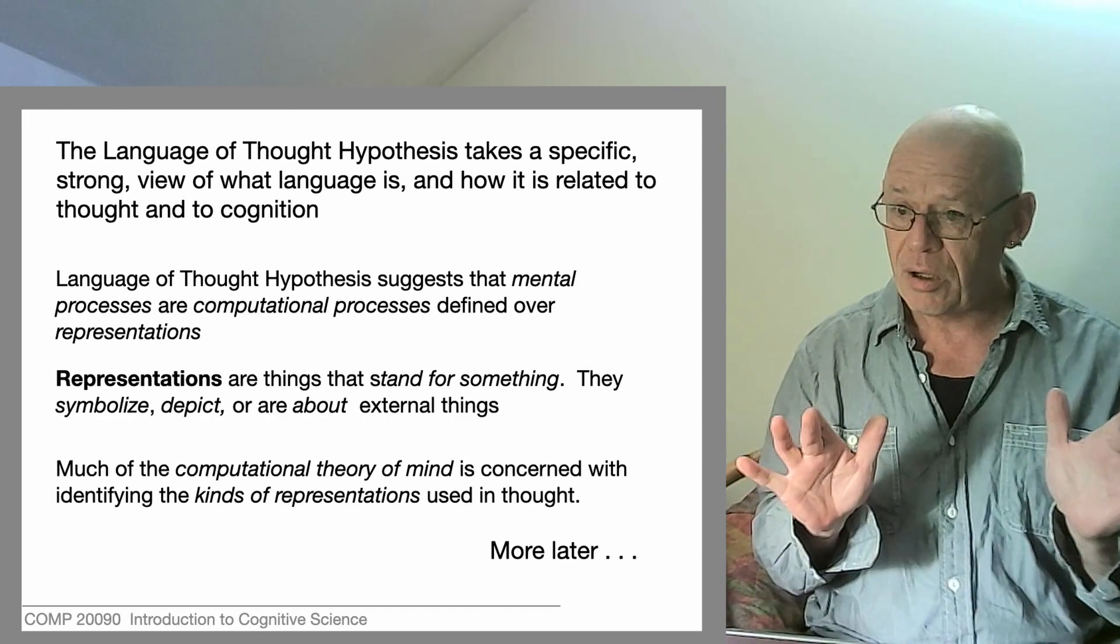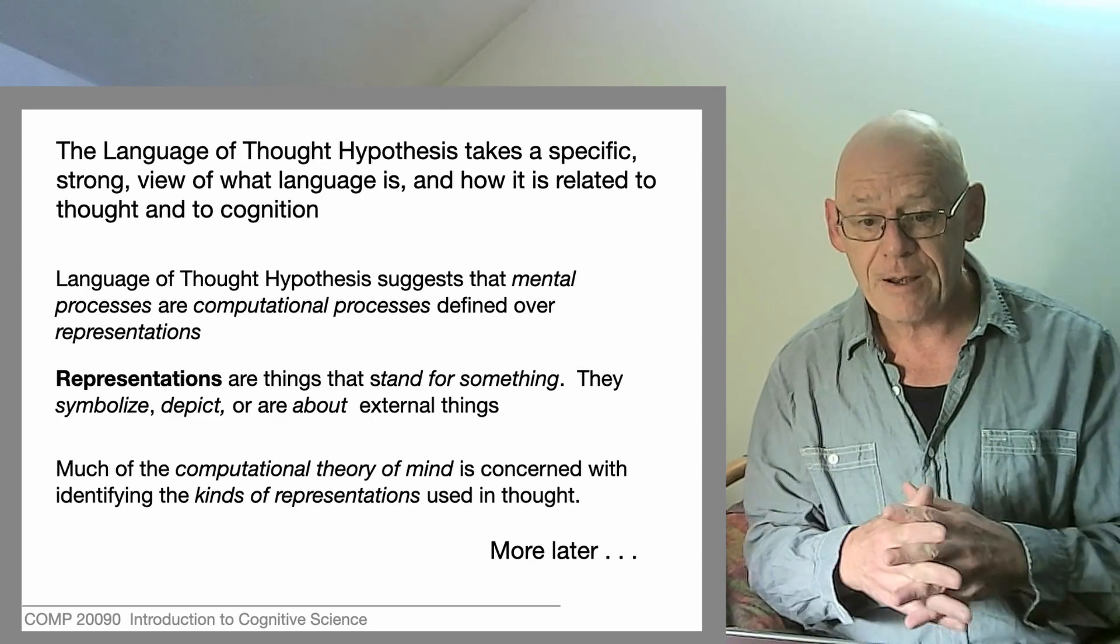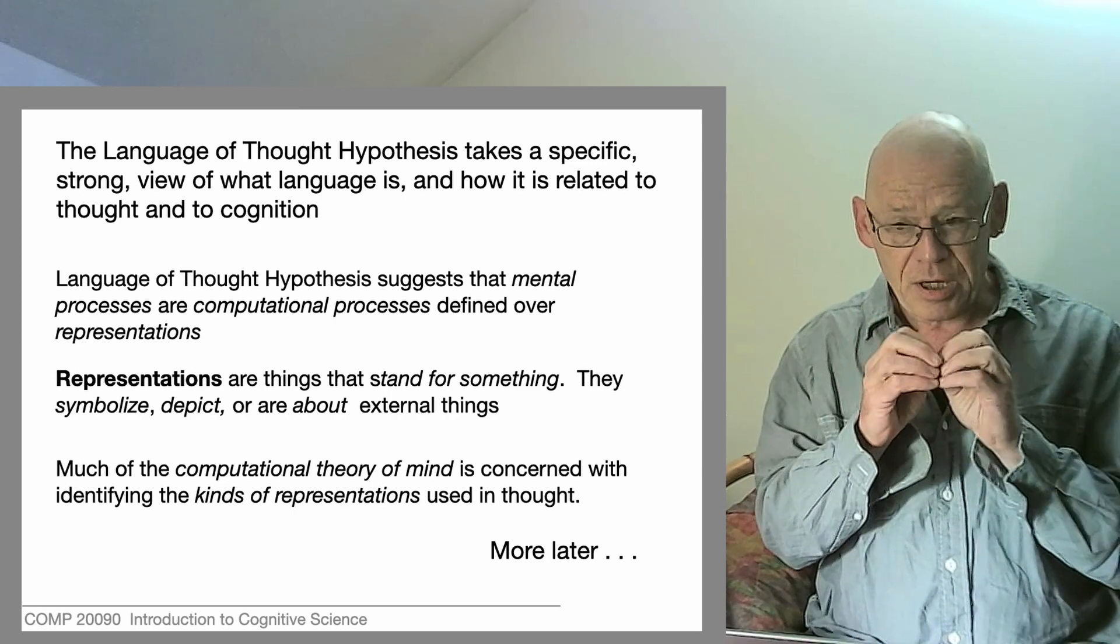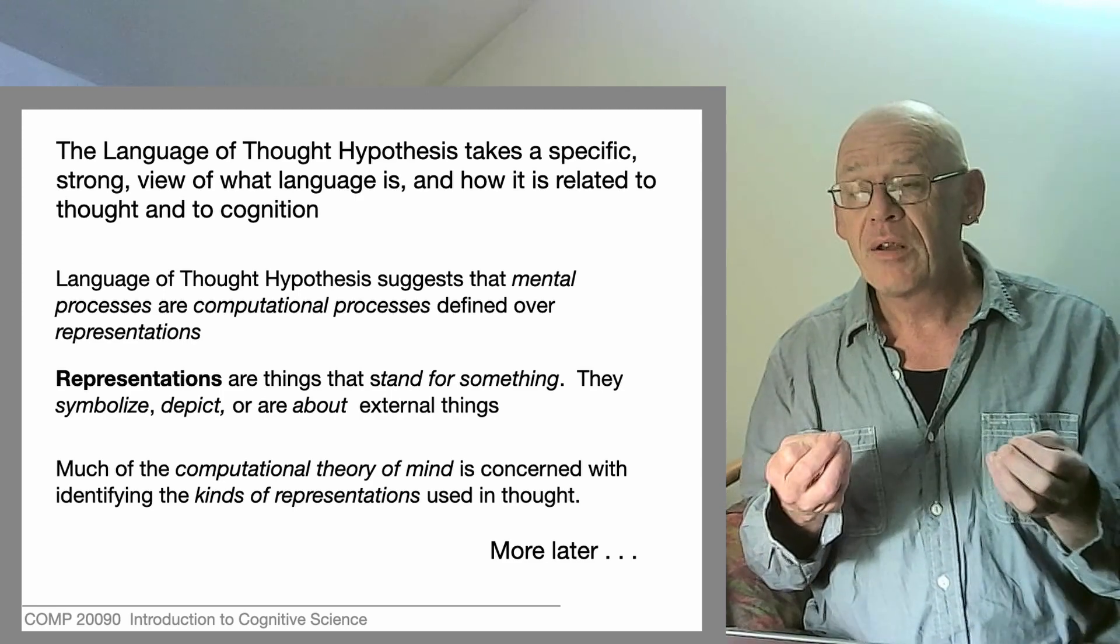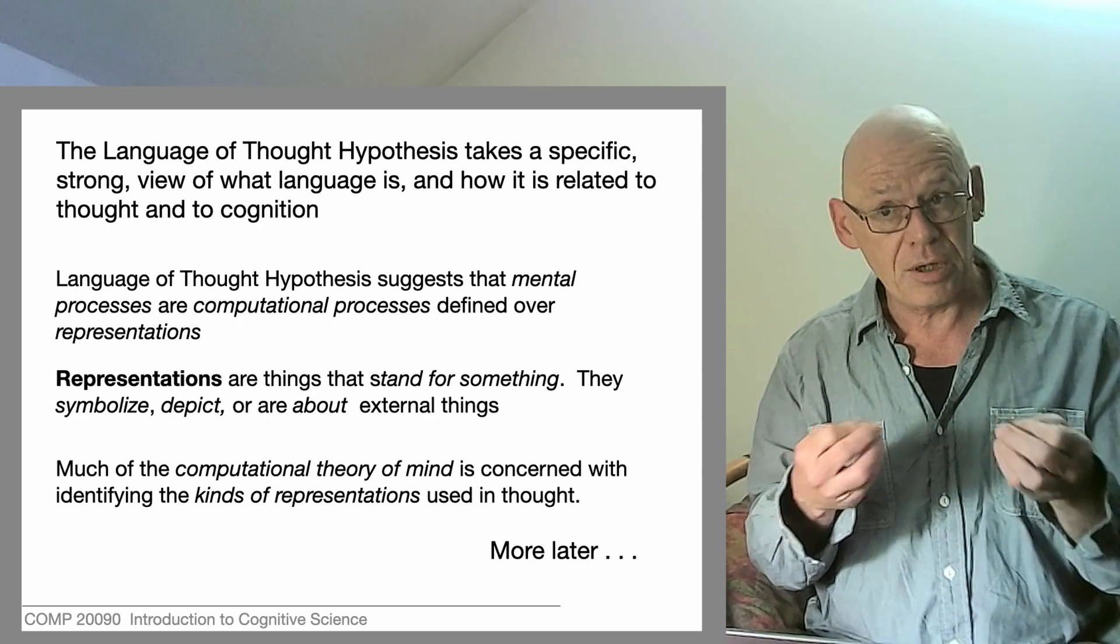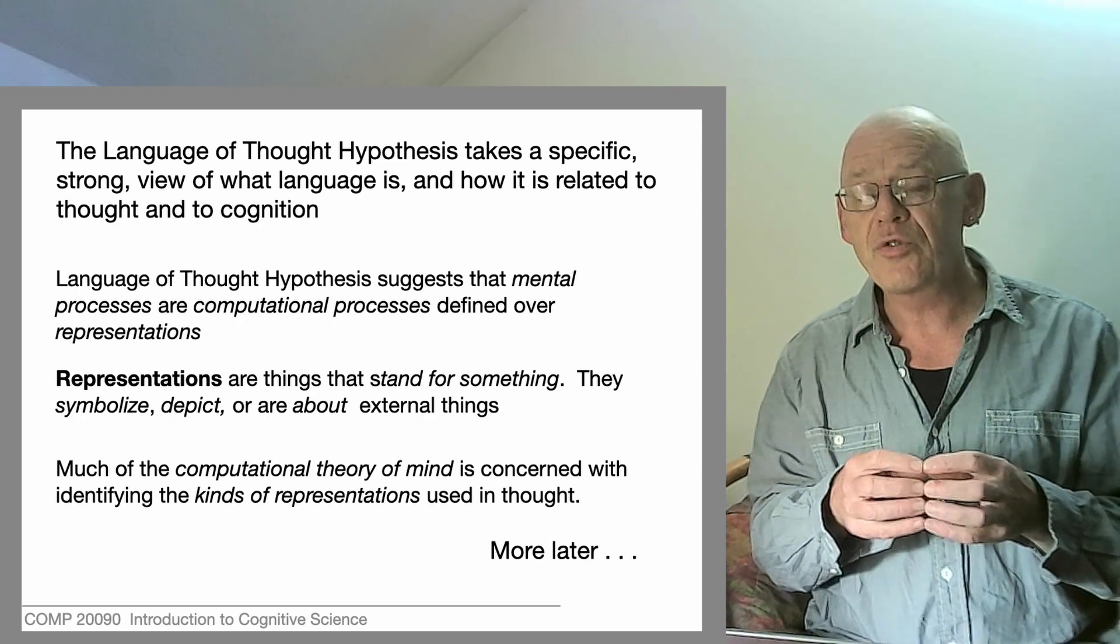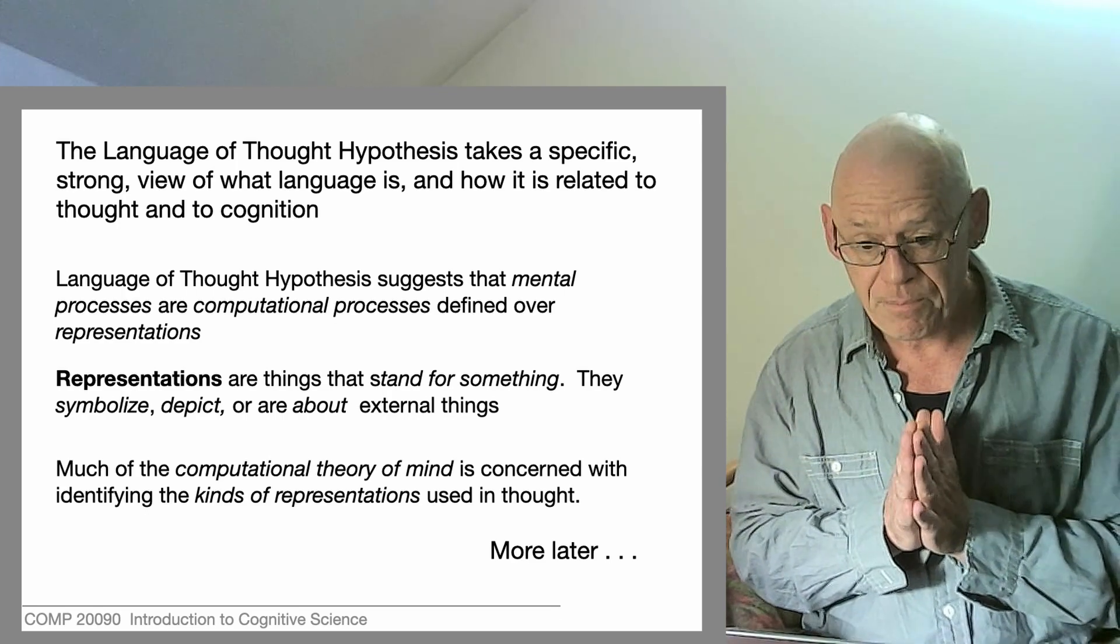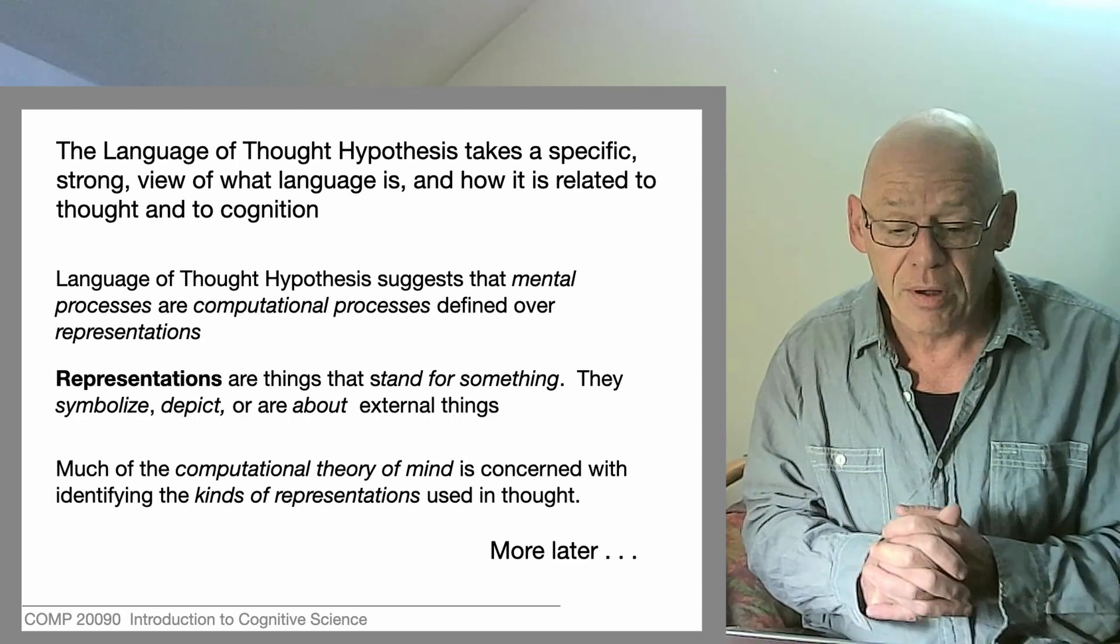So if we say, John kicked the ball, we get one meaning, and if we say the ball kicked John, we get another meaning. Now, computers, as I said, contain patterns of ones and zeros, which are essentially symbols. They can be interpreted as being about something. They're not inherently about something, but they can be interpreted that way. And when we do so, we say that they are symbols which represent something. And words in written language are an example of this as well.